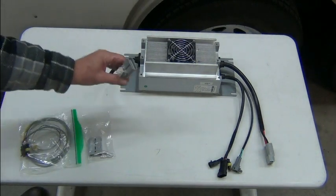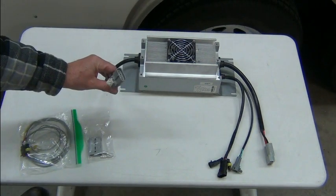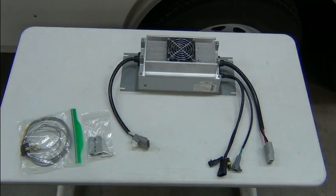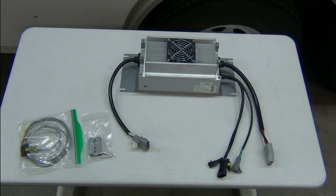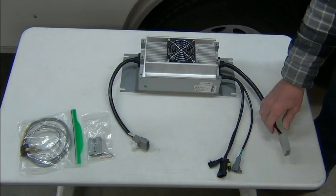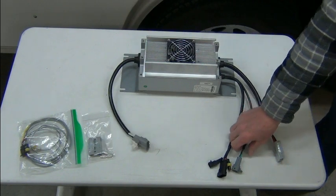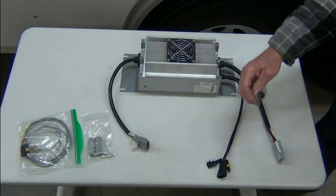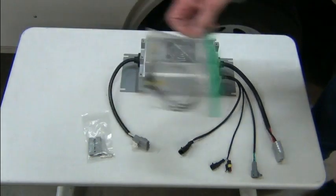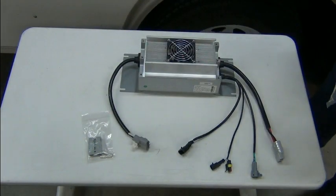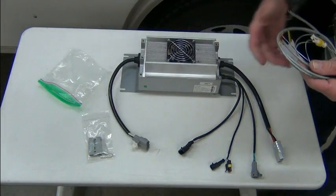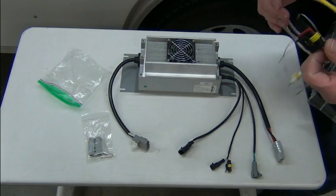So we've talked about this being the AC in, and the red and the black with the Anderson connector being the DC out. Then we have some other lines here, but this is the one that we typically use, and it goes with the little pigtail they provide here.